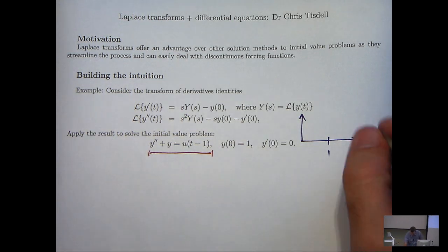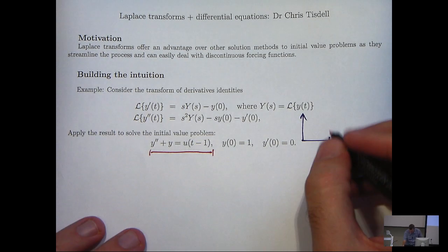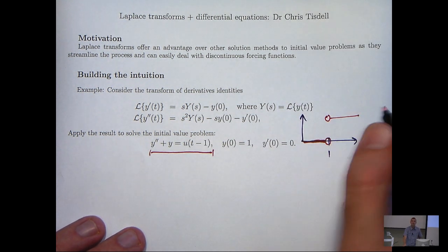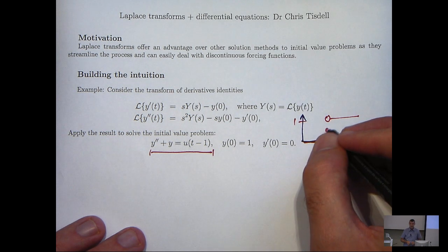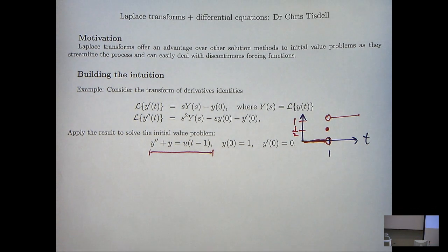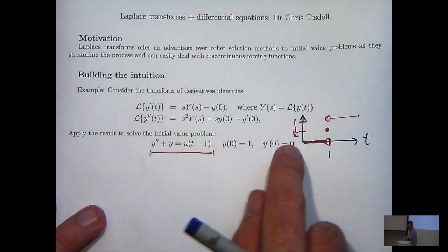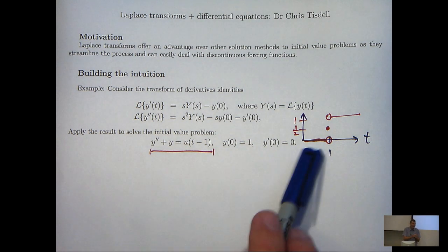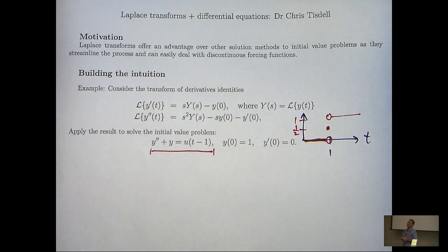In this case the jump occurs at t equals 1. To the left of 1 the function on the right hand side is just 0, to the right of 1 the function is 1, and at 1 the function is 1 half. What we're going to learn today is how we can use Laplace transforms to solve these kinds of problems. What we're essentially going to do is transform this problem, solve the transformed problem, and then untransform everything. It uses the Laplace transform and the inverse Laplace transform.